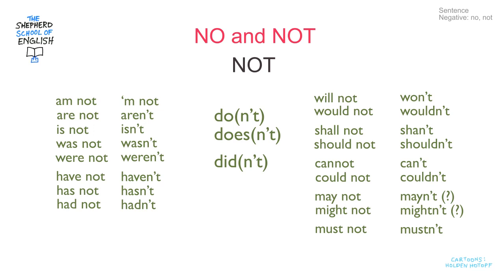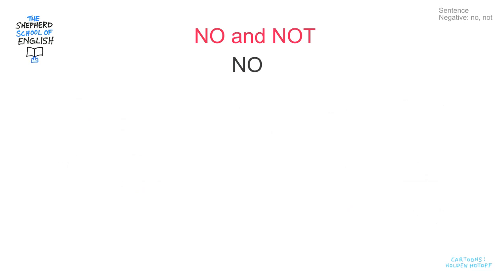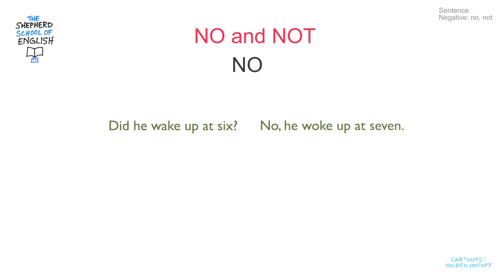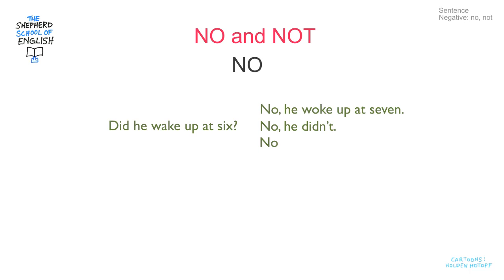So we use not to make a verb negative. Now we move on to how we use no. First, we use no to make a sentence negative, or even to be a sentence all alone. Did he wake up at six? No, he woke up at seven. Or: no, he didn't. Or simply: no. And of course it's the opposite of yes.